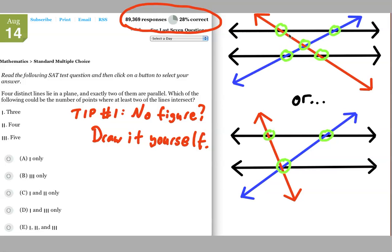So, if I went ahead and counted up the points of intersection, which is what the question is asking for, and I've circled here in green, you'll see that there's one, two, three, four, five points of intersection.